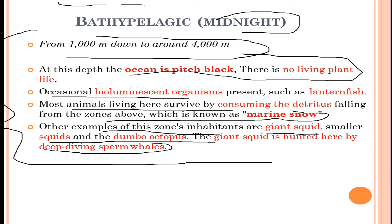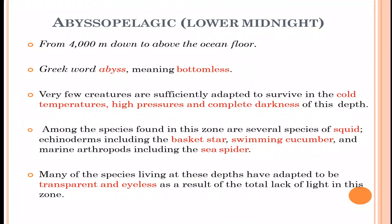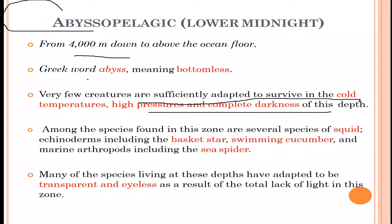Below the bathypelagic zone and below 4000 meters is the abyssopelagic region — the lower midnight region. Very few creatures are sufficiently adapted to survive here due to no light, high pressures, and cold temperatures. Some organisms present include the basket star and sea cucumber. Species at this depth have adapted to be transparent and eyeless due to the total lack of light.